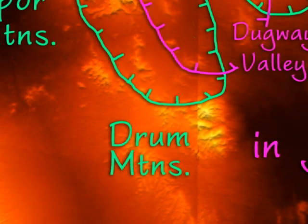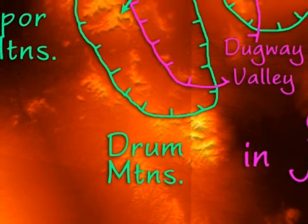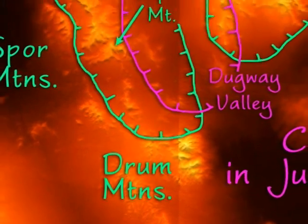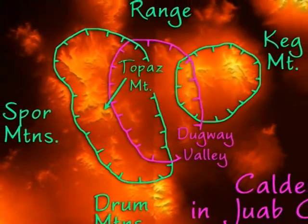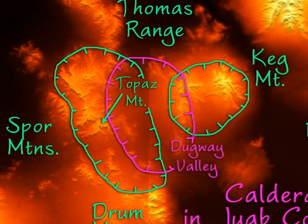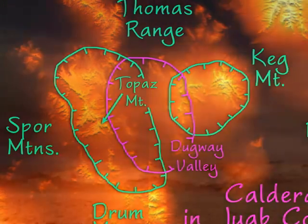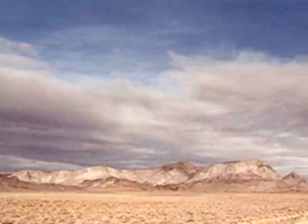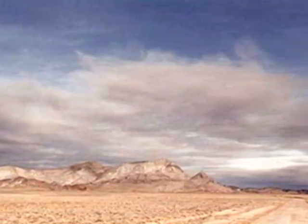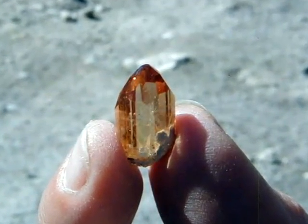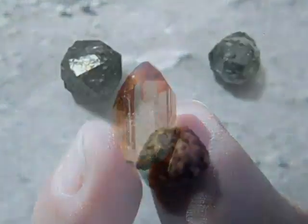The second phase of area volcanism occurred as the calderas subsided and were filled with rhyolite from the Dugway Valley caldera, about 38 to 32 million years ago. These rhyolites now form the core of Topaz Mountain, with its associated topazes and garnets.